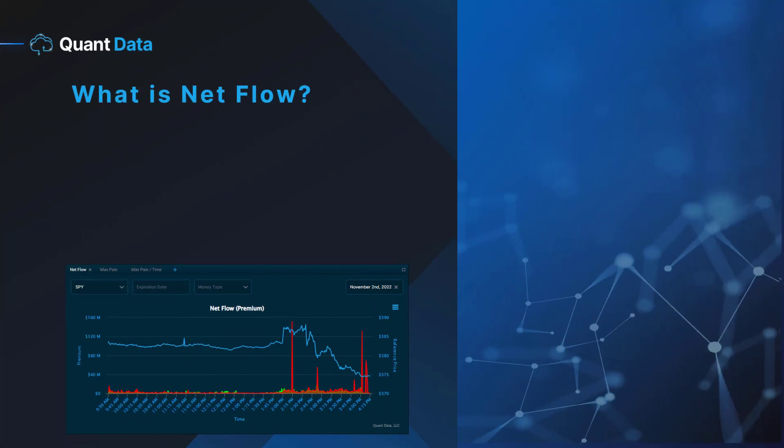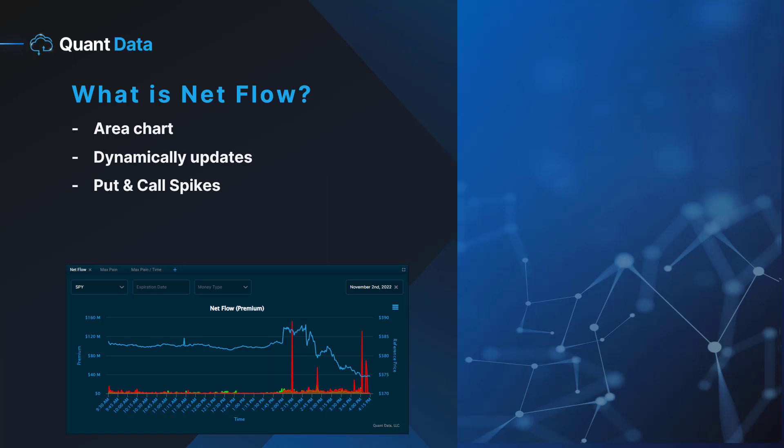On the QuantData platform, the NetFlow tool is actually an area chart. An area chart is a graph that combines a line chart and a bar chart to depict quantities that are changing over time. The NetFlow tool tracks the put premium, the call premium, and the underlying ticker's last price over time. An important thing to note is that it actually dynamically updates in real time, allowing you to see these put and call spikes as they occur.